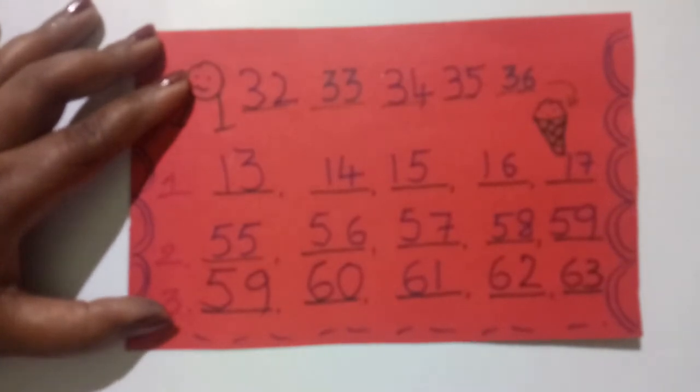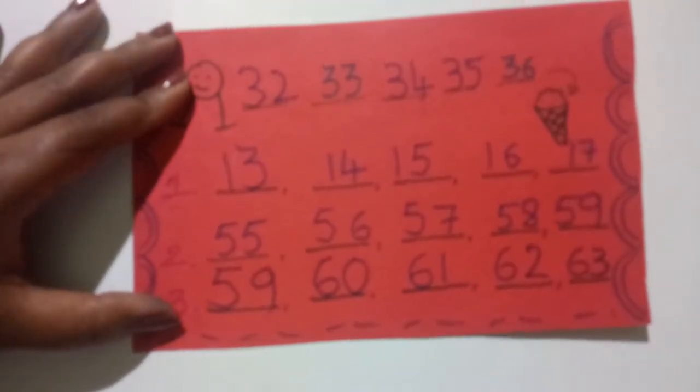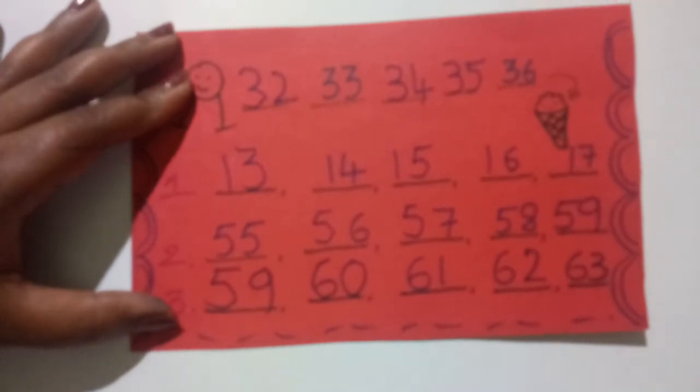We can do this like this. So, this is your missing numbers. Okay, children? Today, I am stopping here. Tomorrow, I will come to you with some other type of numbers. Okay? Thank you.